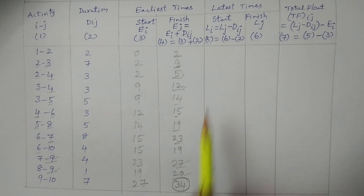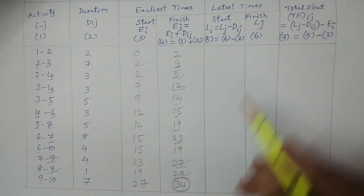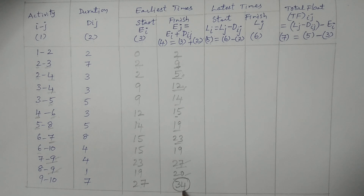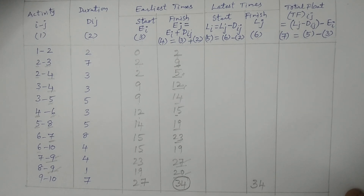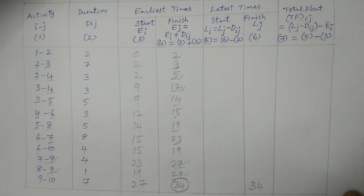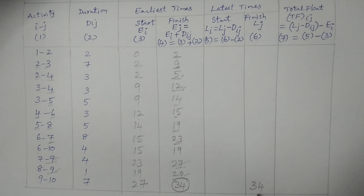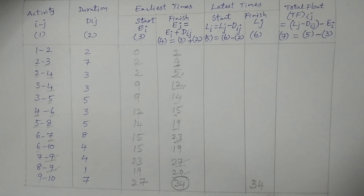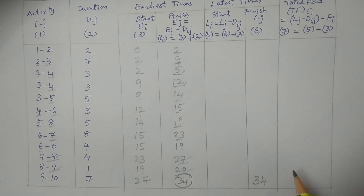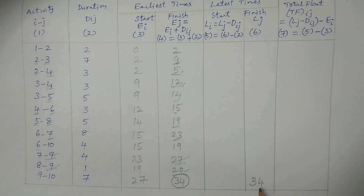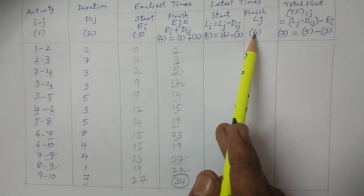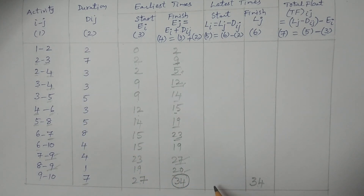Now it is time to calculate latest times. For the last event, E equals L. We consider the last value as L: the last event value is 34. Remaining values are obtained by subtraction. 34 minus 7 equals 27. For node 9: L9 is 27. For event 8 to 9: j equals 9, so it is 27. 27 minus 1 equals 26.